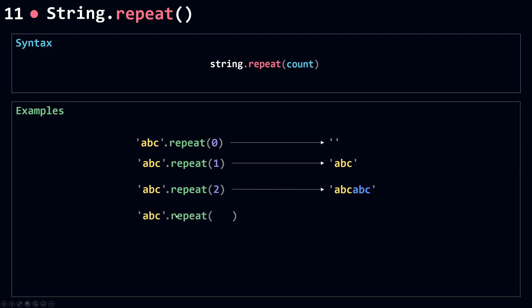If I call repeat with 3.5, repeat will convert this number to an integer, so this will be three. So the abc string will be repeated three times.